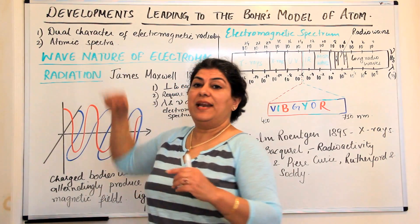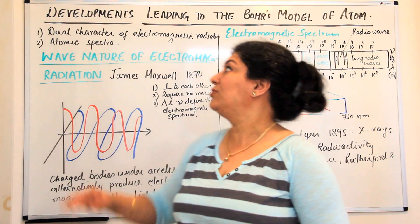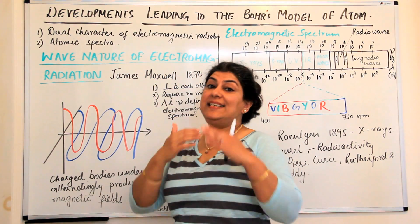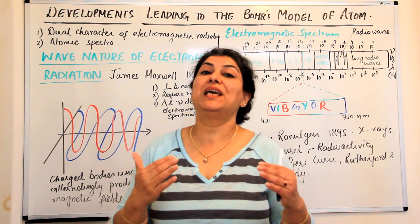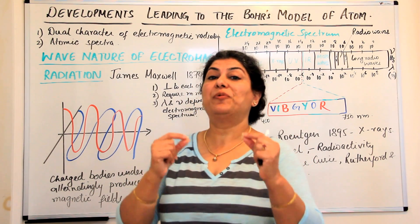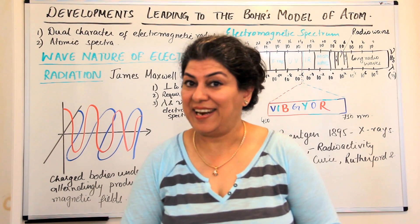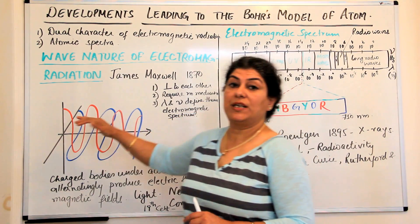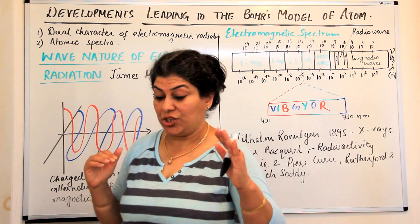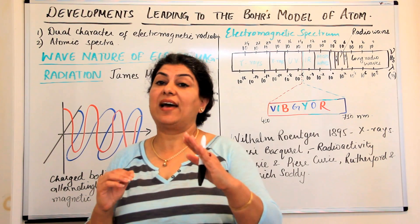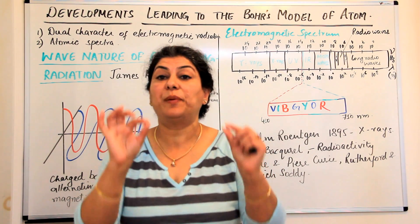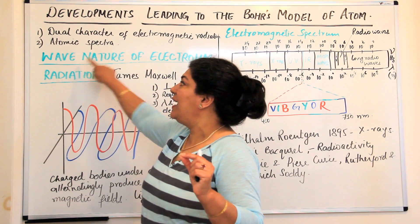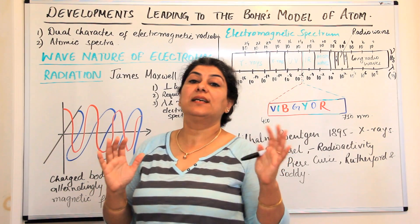In the next few videos, we will be studying the dual nature of electromagnetic radiations and atomic spectra in detail, and only then will we be able to understand how Niels Bohr proposed his model of an atom. We will study the wave nature and particle-like nature of electromagnetic radiations one by one, starting with the wave nature.